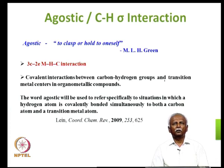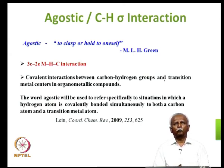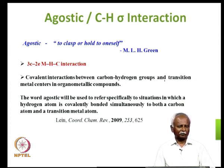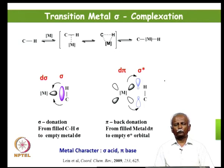You end up with a three-center two-electron interaction where there is an agostic interaction between the metal and the C-H bond. These covalent interactions between the C-H bond and the metal are interesting because they have been structurally characterized. A recent review on this whole interaction is given in coordination chemistry reviews. 'Agostic' comes from a term which means to clasp or hold to oneself — the metal is holding a ligand close to itself in an agostic fashion.